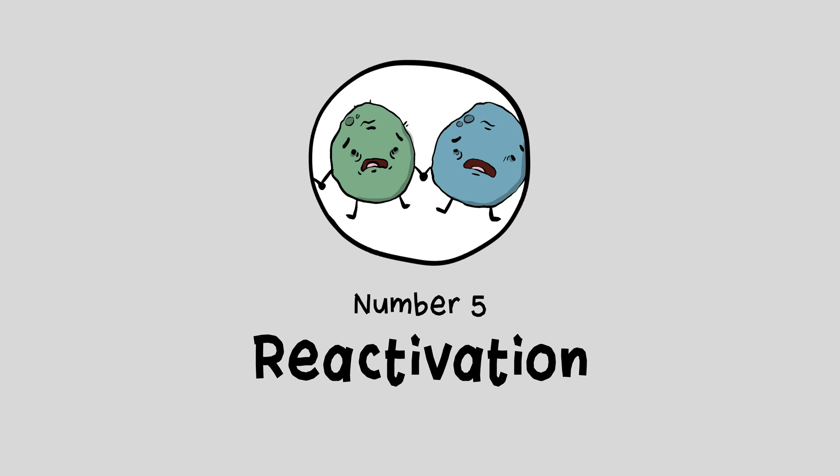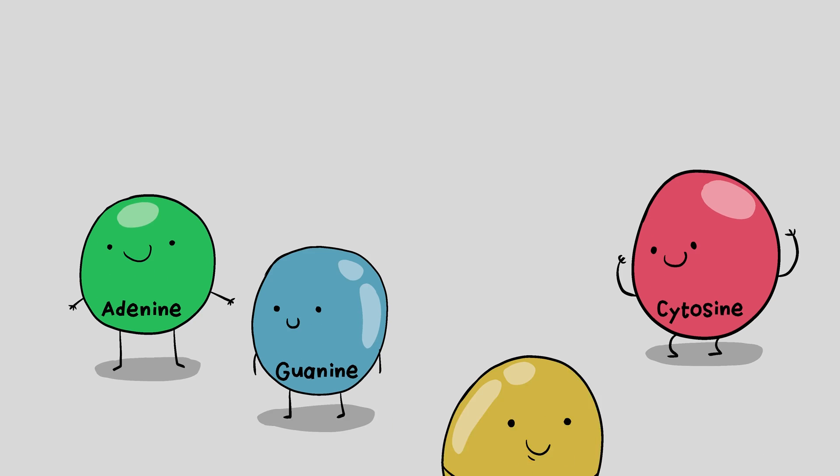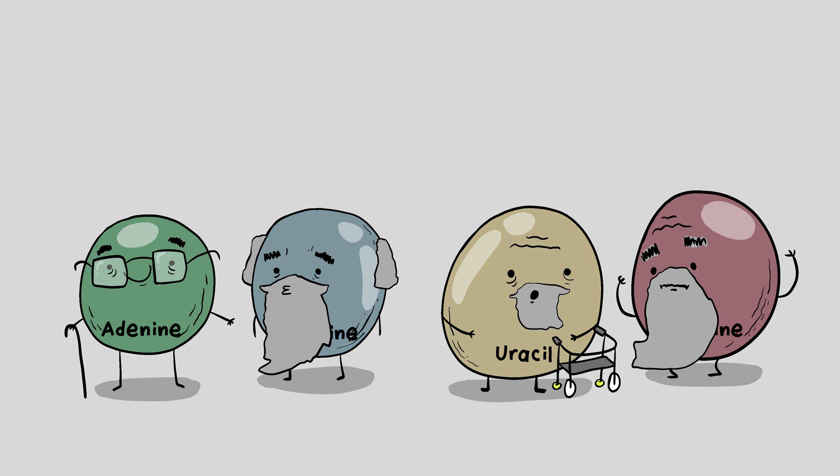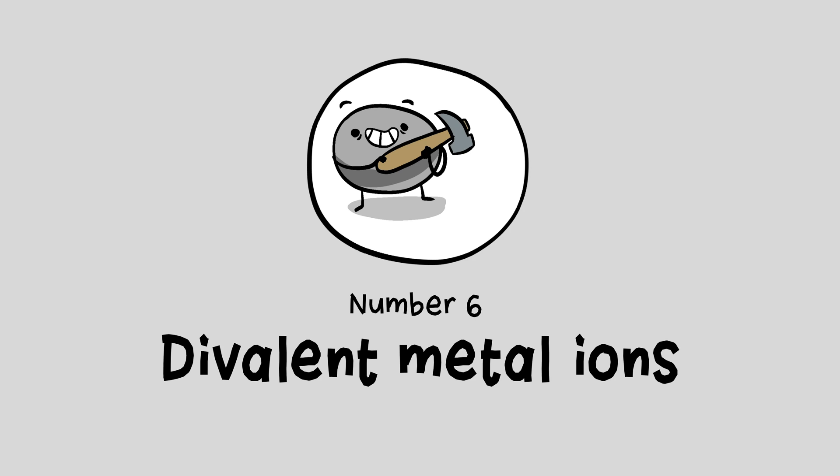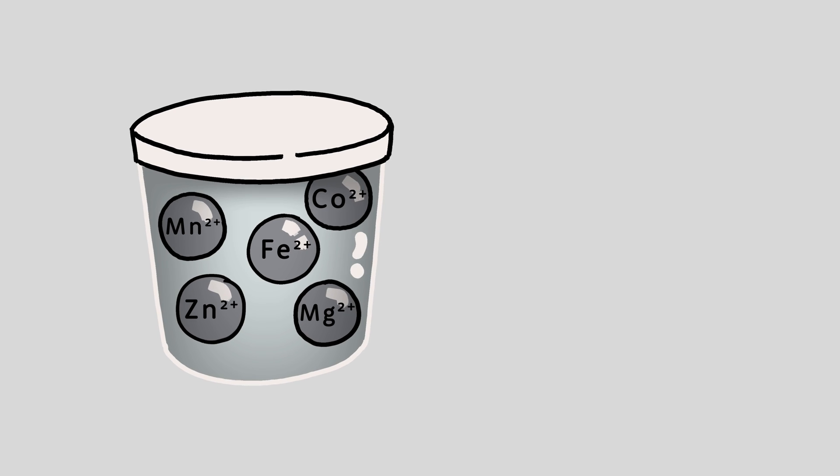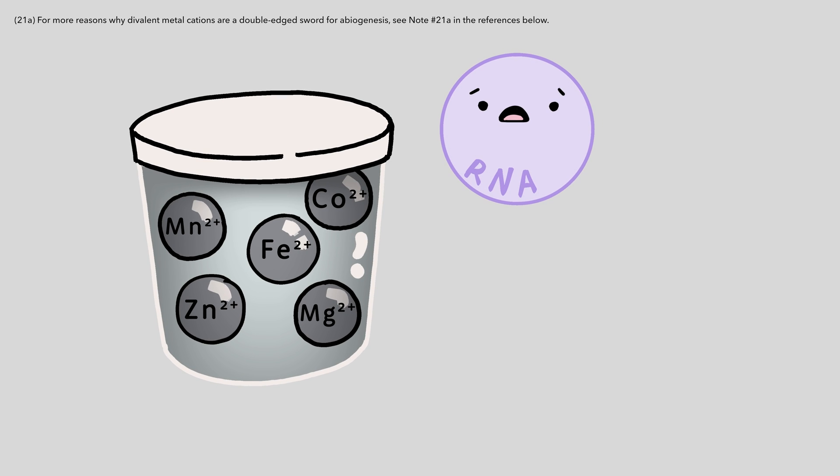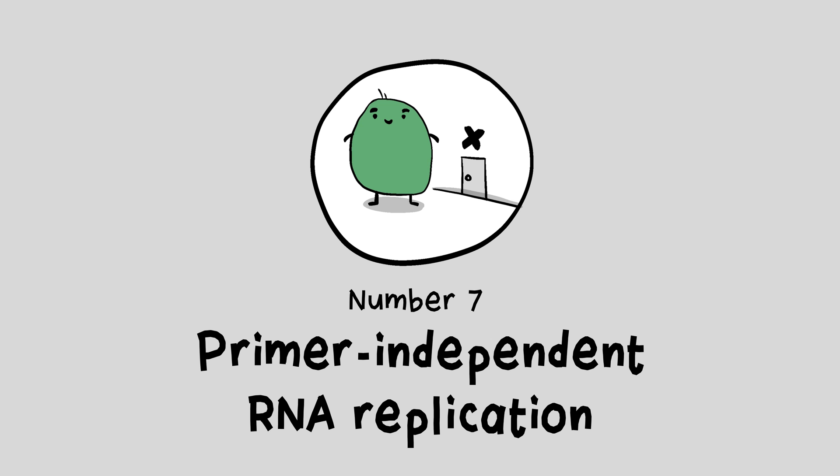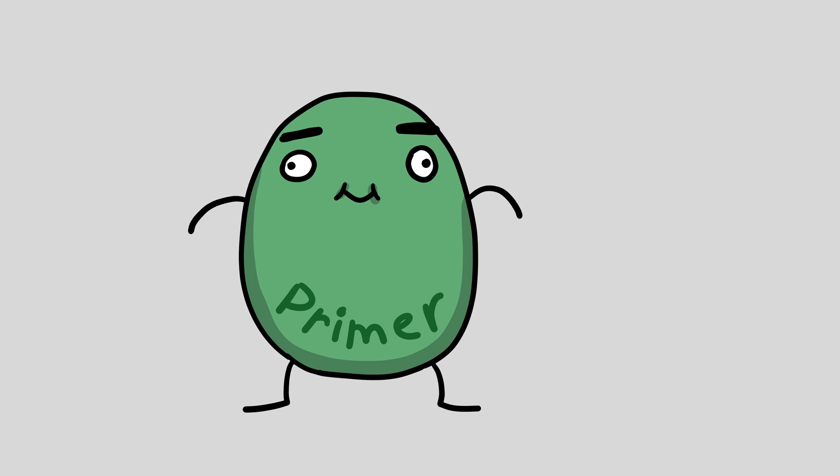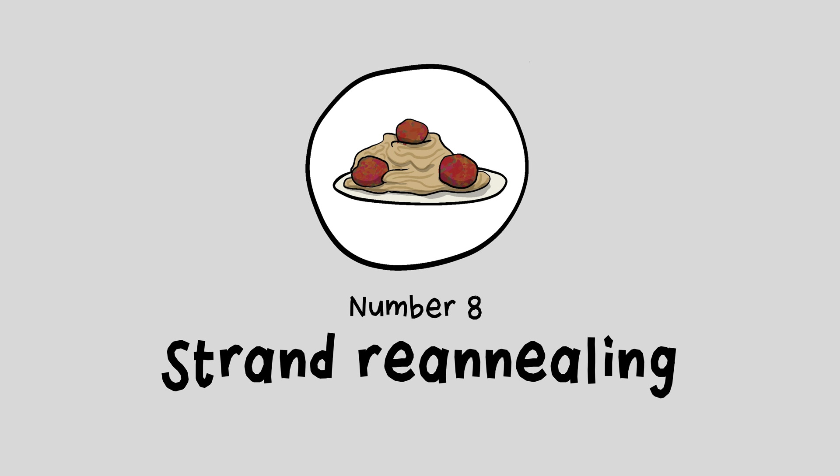Number five, reactivation. Basically the same thing as number four, but the building blocks themselves also have their own expiration date. Again, time is not friendly to abiogenesis. Number six, divalent metal ions. These are things that are supposed to help, but they actually degrade the RNA over time. And hamper membranes too, especially magnesium. Number seven, primer-independent RNA replication. The mechanism these proto-RNAs needed to replicate required constant access to these primers. But the protocells would prevent this because the building blocks are too big.